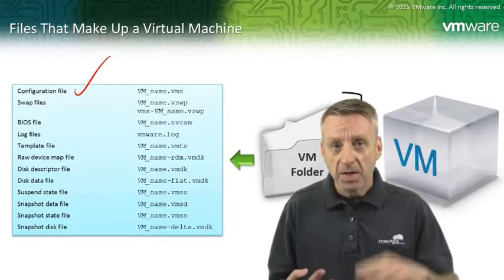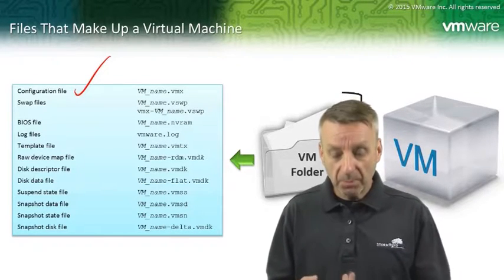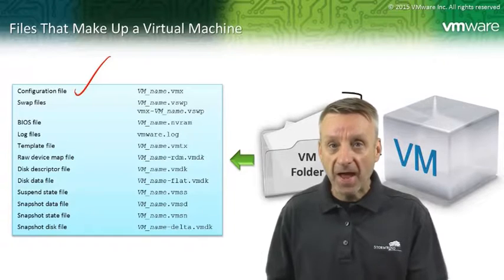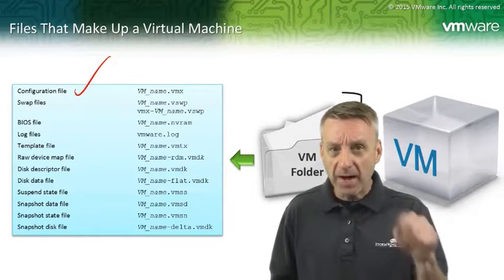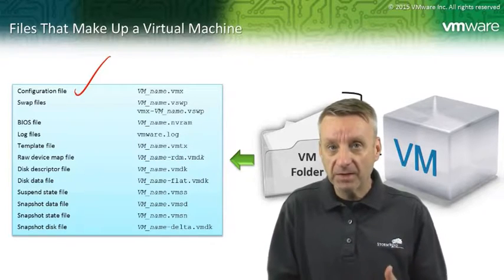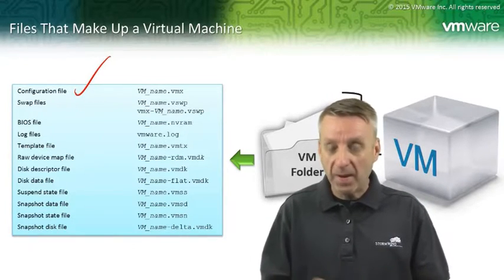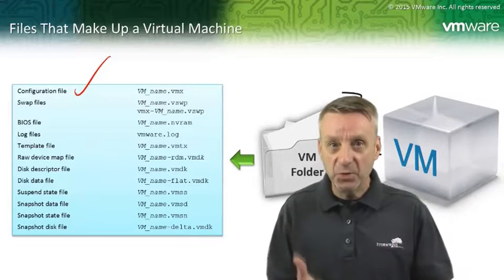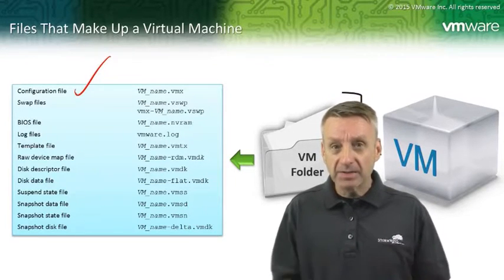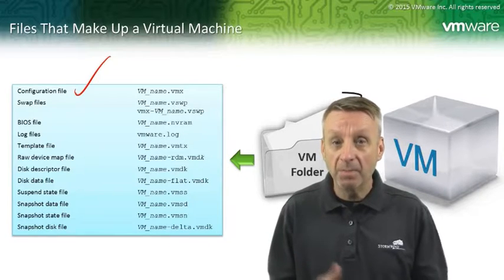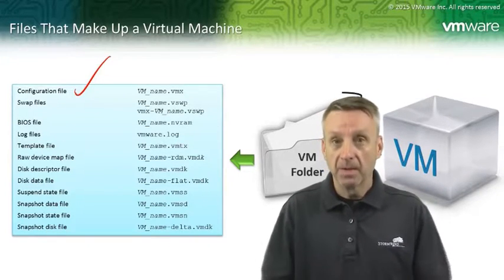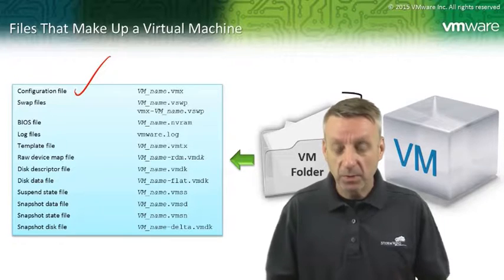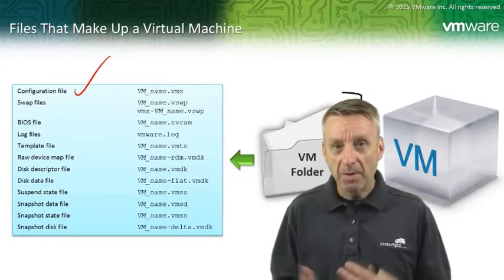The configuration file describes the virtual machine: the hardware, the operating system, the MAC address, the IP address — all that information is in the VMX file. Now this is a flat file, meaning you can browse out to the datastore, find the VMX file, open it with Notepad or WordPad, and view it — and not only view it, you can modify it. I don't necessarily recommend modifying the VMX file, but there are certain times you need to.